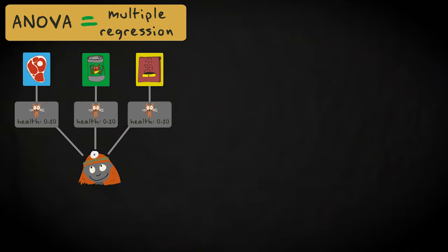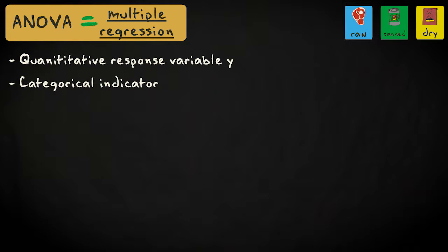A vet rated cat health on a scale from 0 to 10. We have a quantitative response variable and a categorical independent variable, or indicator. The indicator has three levels, and only binary indicators are allowed in regression, so we need to create two dummy variables to identify these levels.